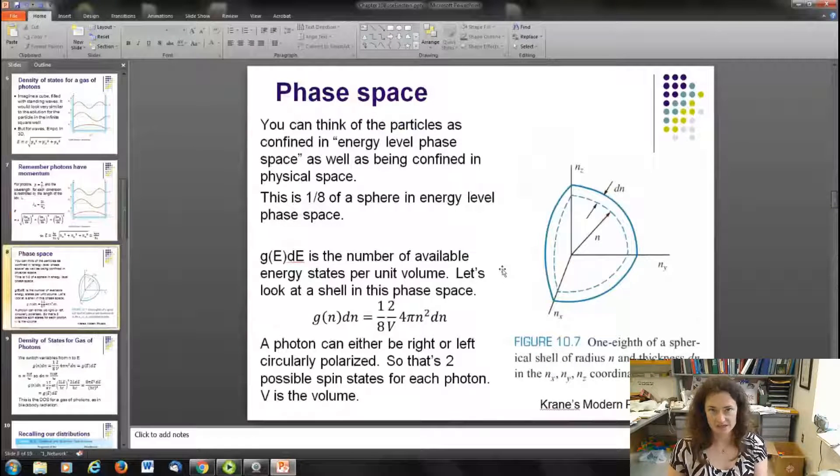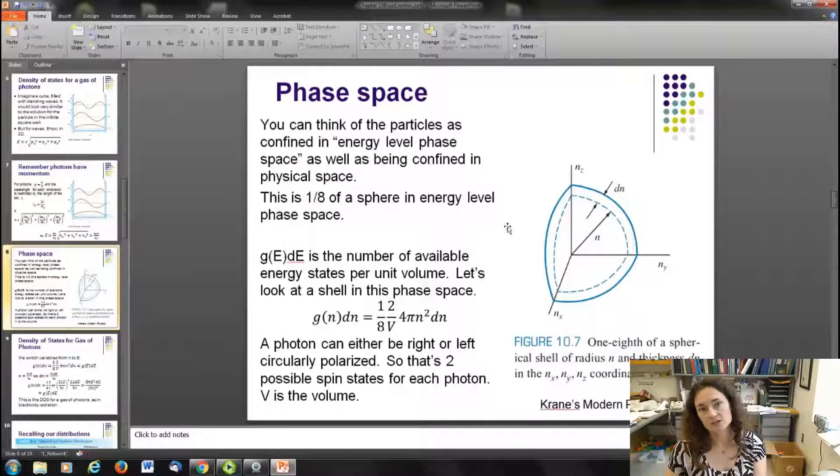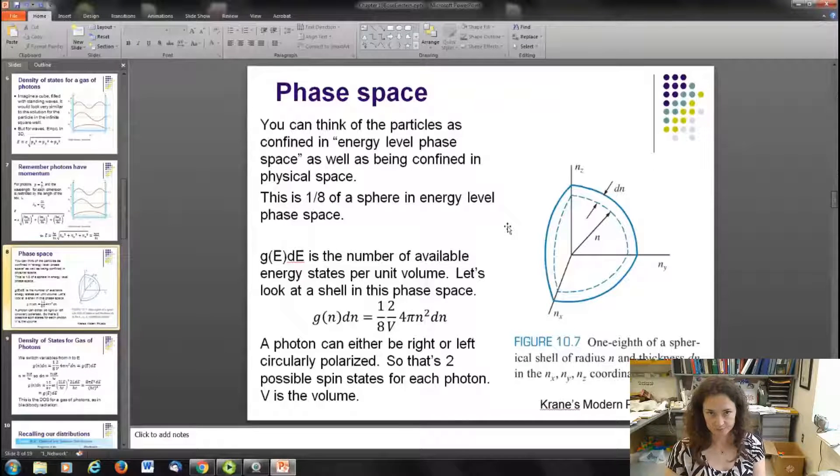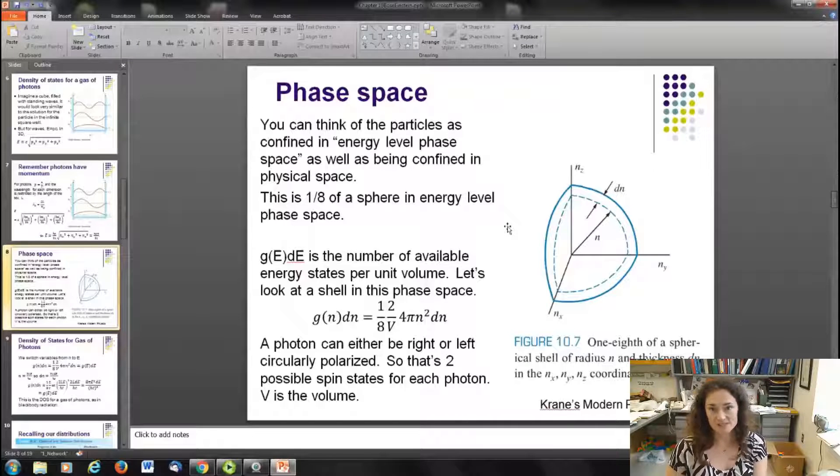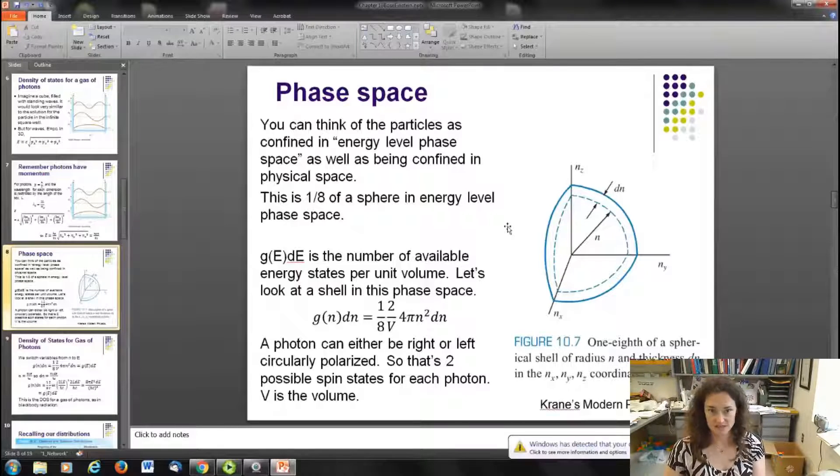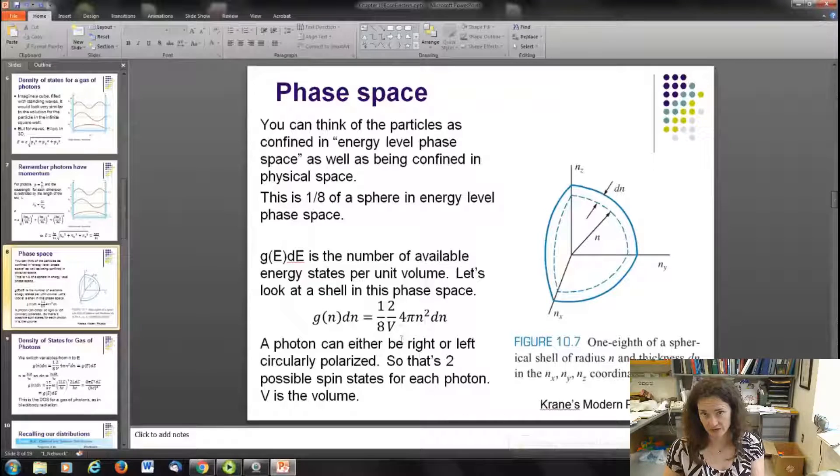But we're going to use the same kind of idea in that we're going to put this in phase space. And the phase space here is going to be our energy level space, and then we're going to switch that over to energy with a change of variable in just a little bit. Remember that you can't have any negative values for your energy levels. They have to start at 1 and go up. And so that means that only one quadrant of the little sphere that's formed in phase space is going to be useful to us. So we're going to have 1/8 of a sphere in energy level phase space, and we're just looking at a little slice of that sphere because we want to know what the density of states is.